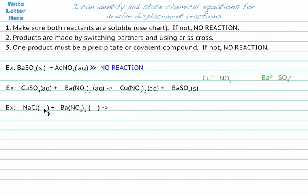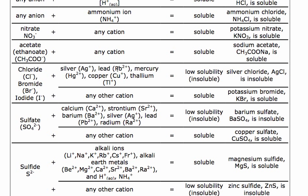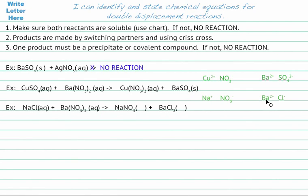Next example: sodium chloride plus barium nitrate. Sodium chloride is salt — from common experience we know salt is soluble in water, so we don't need to check the table. All nitrates are soluble, so both reactants are aqueous. Switching the partners: sodium goes with nitrate to make sodium nitrate, and barium goes with chloride to make BaCl₂. Checking solubility: sodium nitrate is another nitrate, so it's aqueous. For barium chloride, looking at the chloride row — chloride is insoluble with silver, lead, mercury, copper, and thallium, but barium falls under any other cation, so barium chloride is soluble and aqueous.